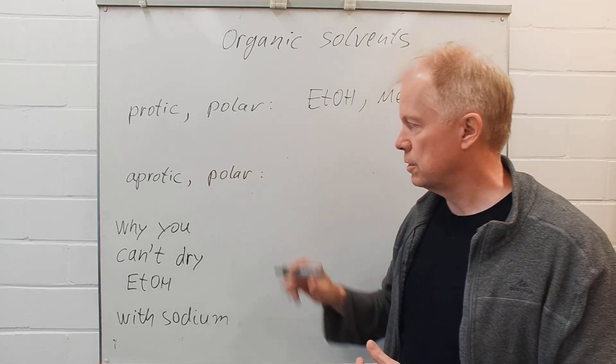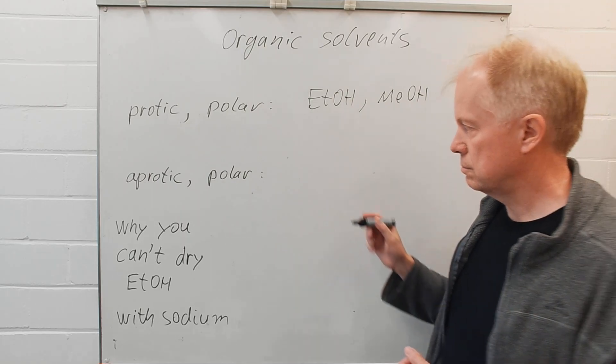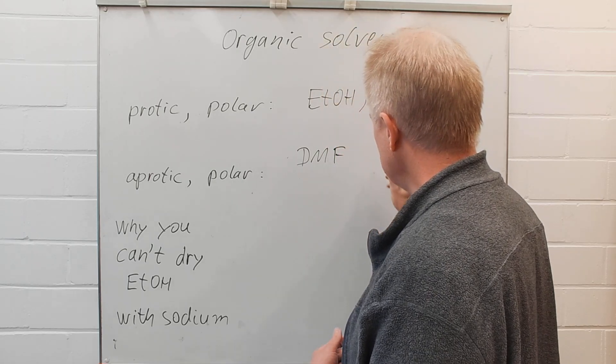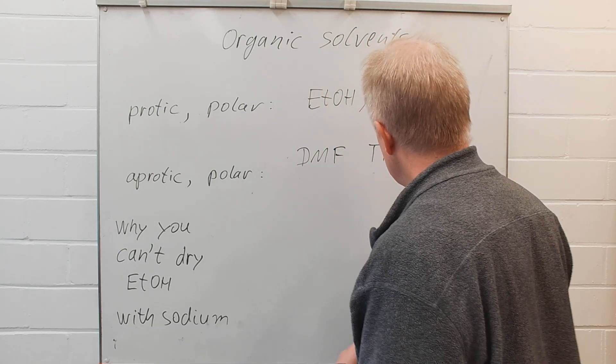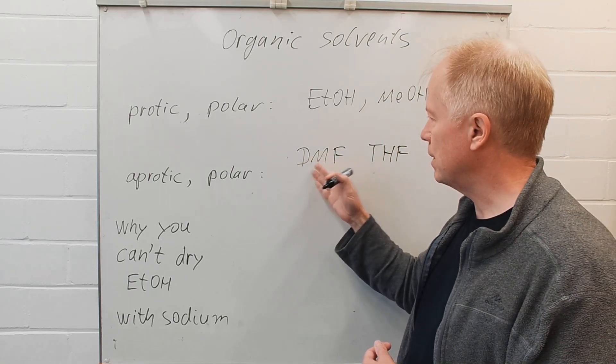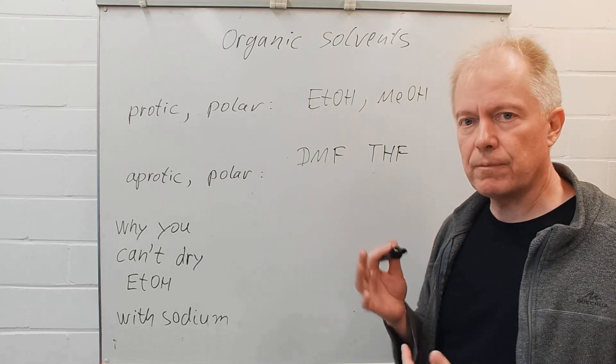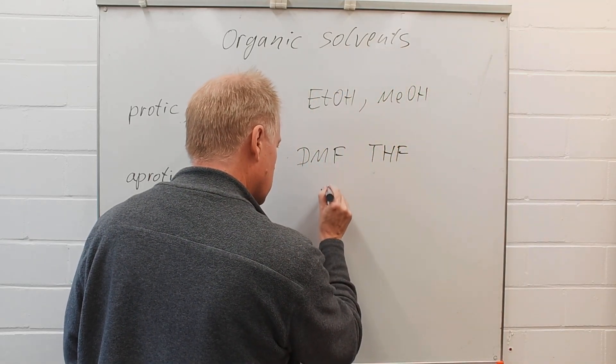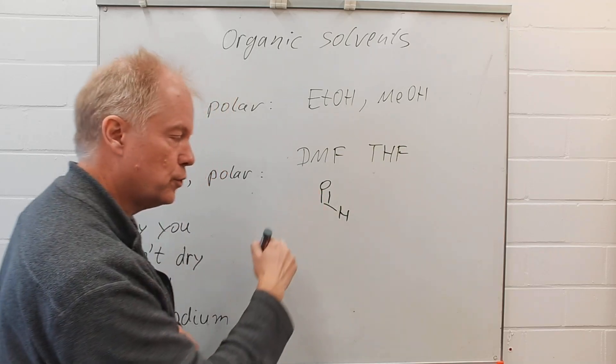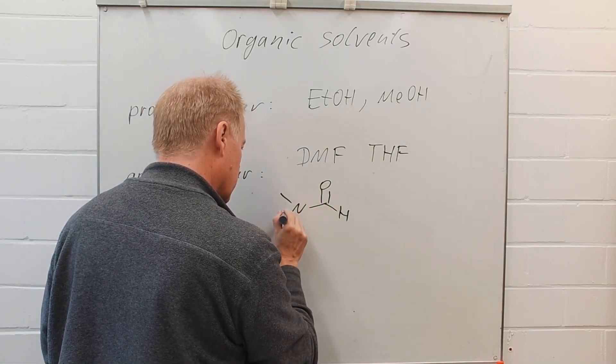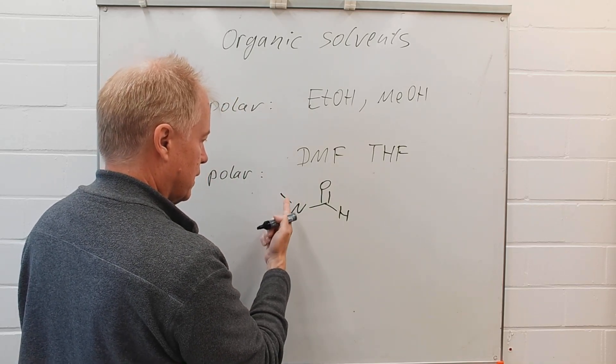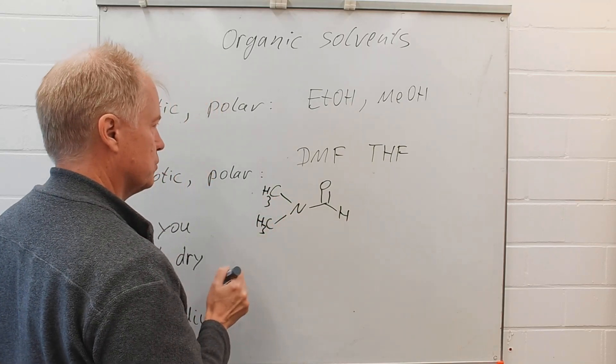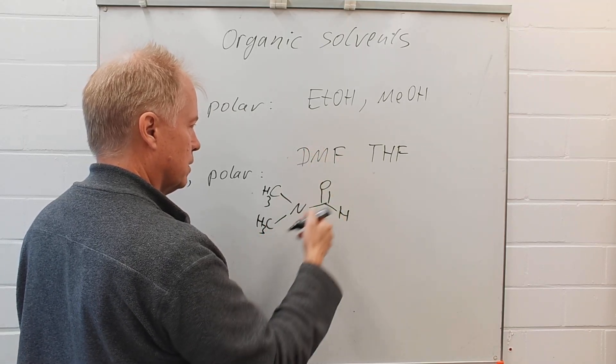Then to aprotic polar organic solvents. Examples are DMF and THF. The structure dimethyl formamide, it has something to do with formic acid. So the structure is then a formyl group and an amide with two methyl groups. Dimethyl formamide.